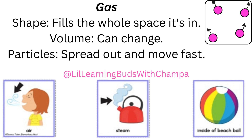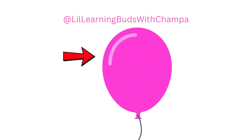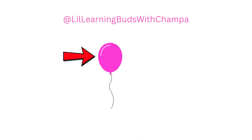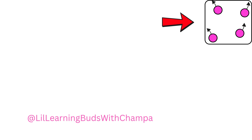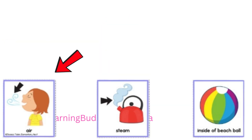Gases don't have a shape of their own — they fill up whatever space they are in. For example, the air inside a beach ball spreads out to fill the whole ball. Volume can change depending on the space: if you blow more air into a balloon, it gets bigger; if you take the air out, it becomes smaller. Look at the pink bubbly picture on the top right — gases are made of tiny bits called particles, and these particles are spread out and move really fast. Examples: a beach ball, a balloon, and the air you breathe.